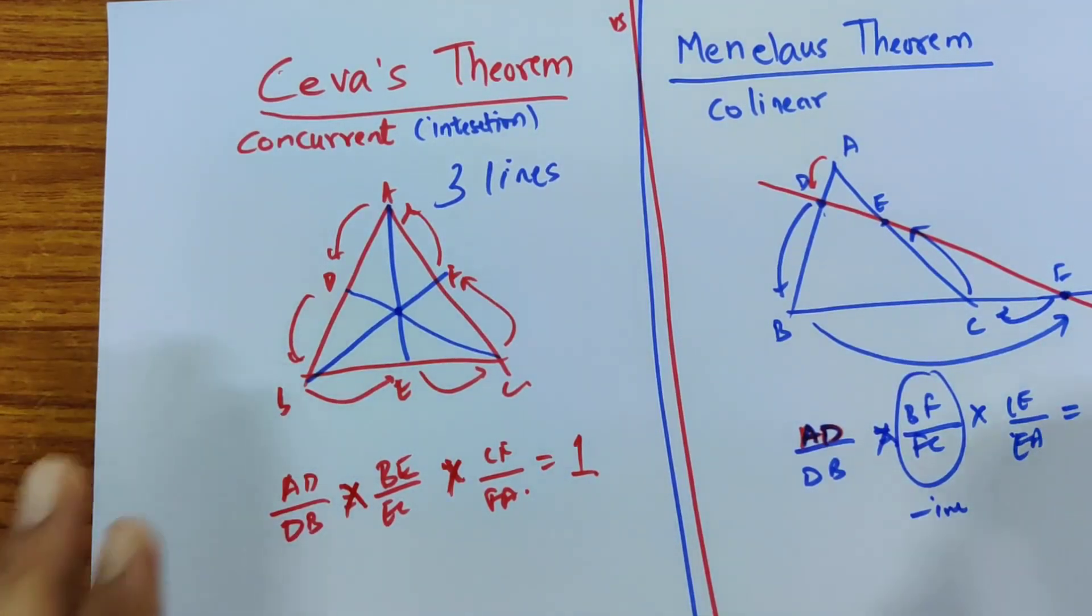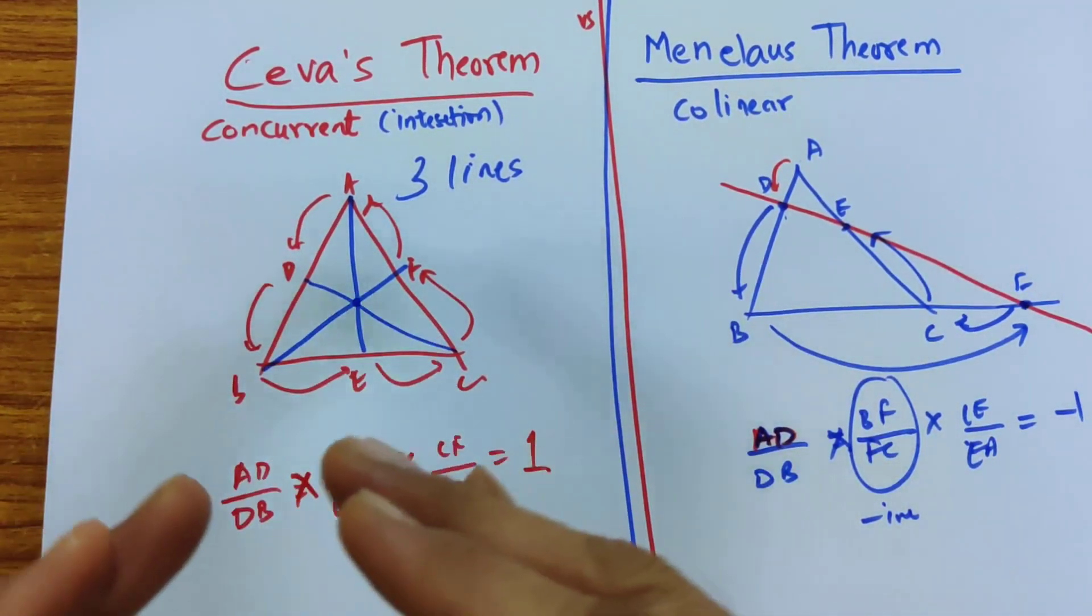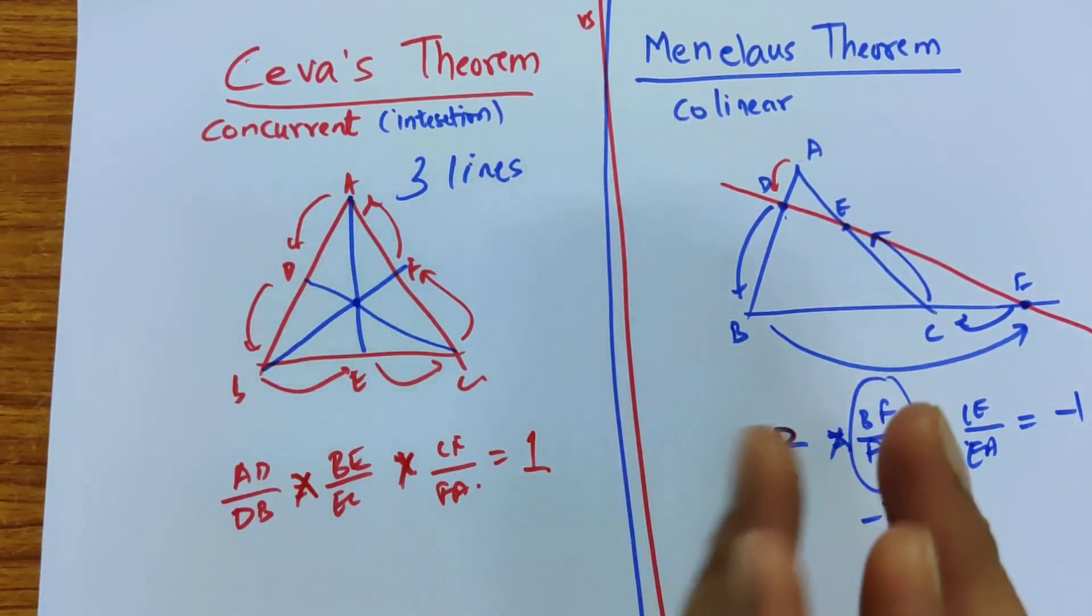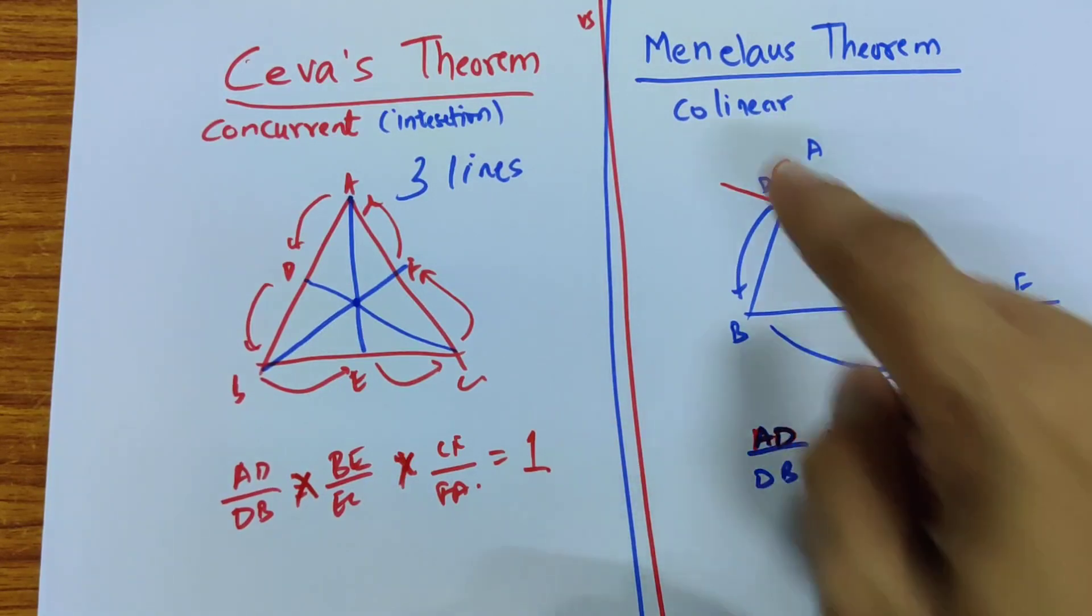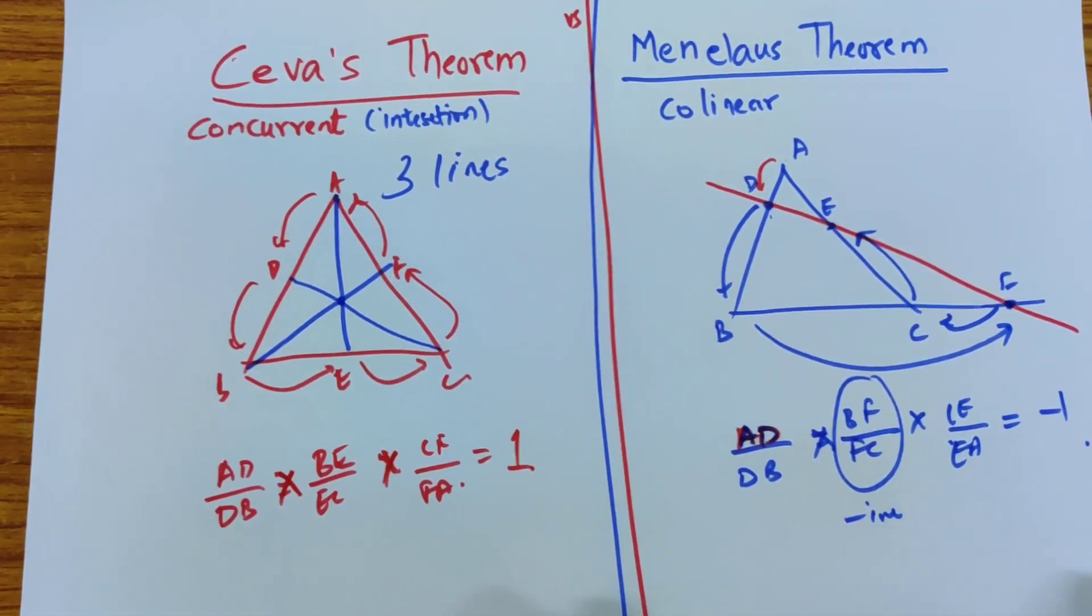So there are two different theorems that are talking about two different phenomena. One is with three lines and how all of them intersect at one point which is called concurrent and the other is about being in one line which is collinear, linear, collinear. All three are in the same line.